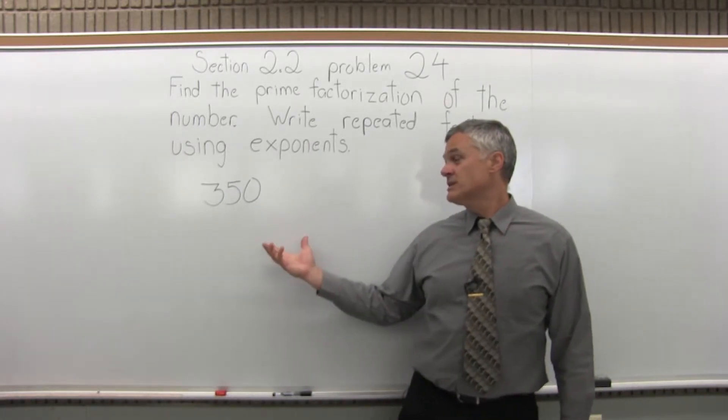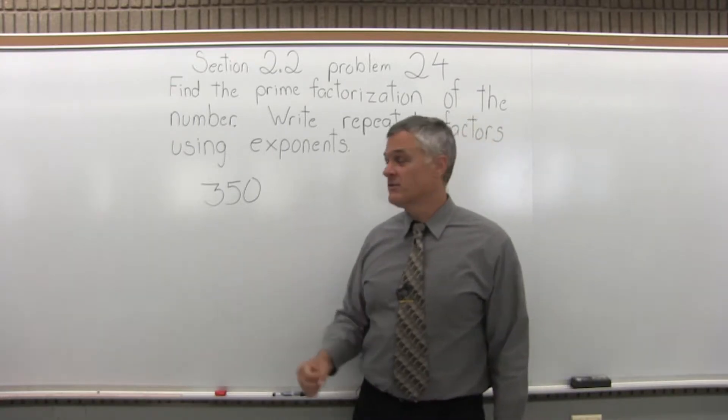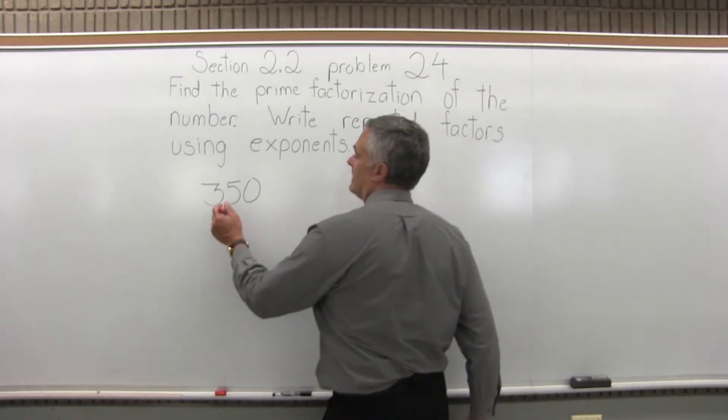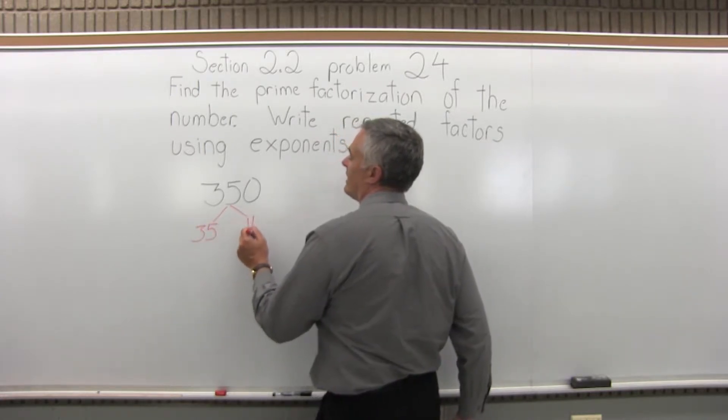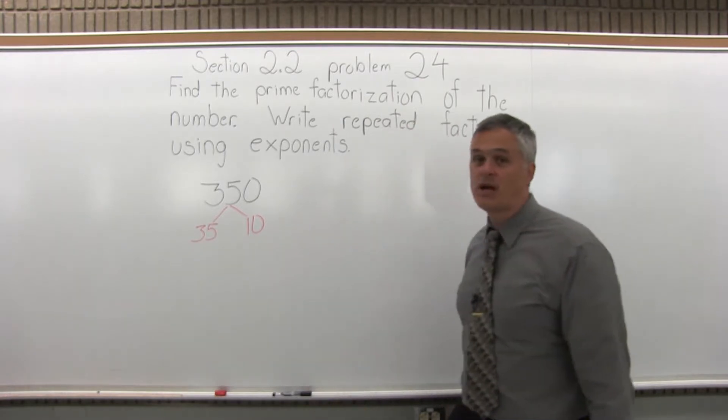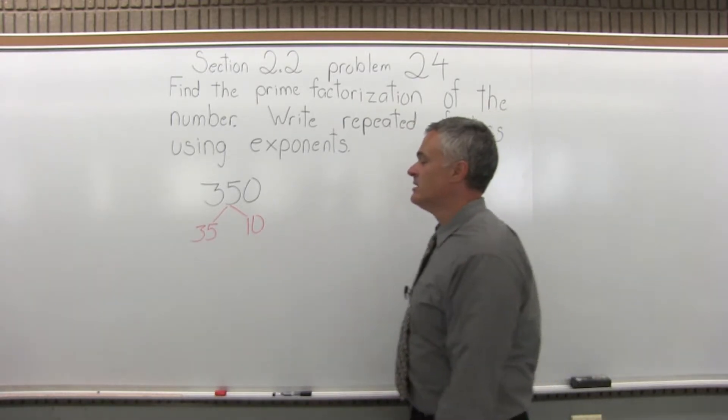We want to break this down into the primes that multiply to make 350. The first two numbers that I see to multiply to make 350 would be 35 times 10. Neither one of those is prime, so they both have to be split down some more.